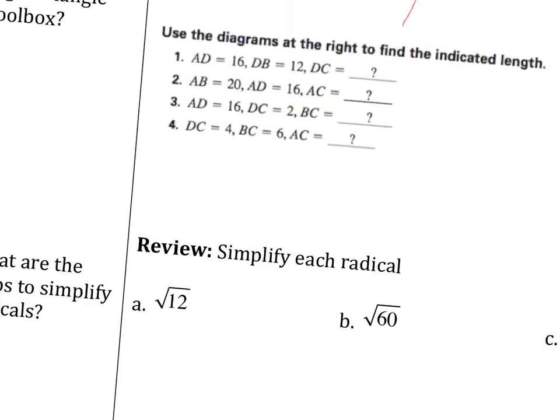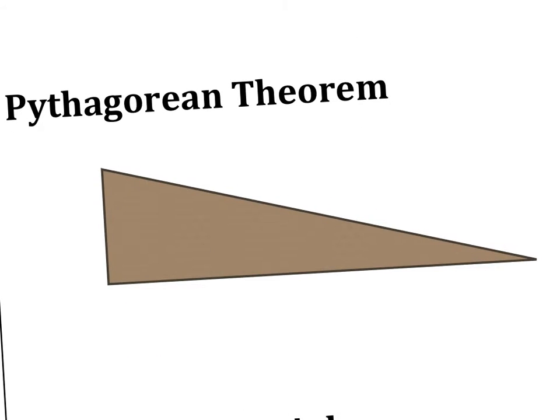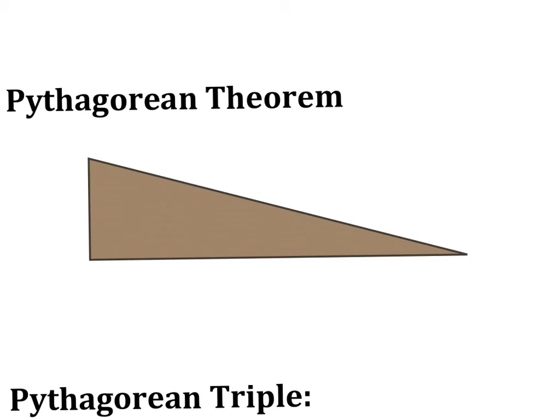All right, so let's take a gander over here and what is the Pythagorean theorem. First off, it only applies to what type of triangle? Right triangle. So please draw a right triangle. Over here this is a leg, this is a leg, and this is your friend the hypotenuse.